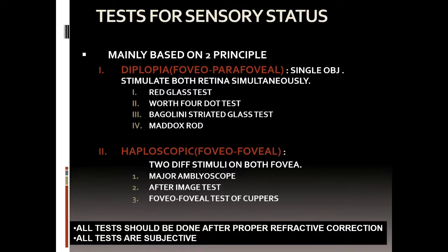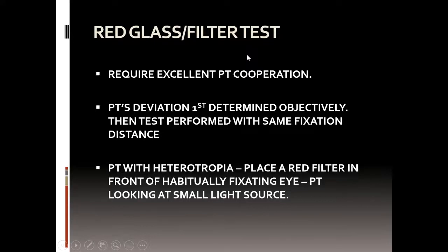When we talk about tests for sensory status, there are foveo-parafoveal tests — which are diplopia-based tests — including the red glass test, Worth 4-dot, Bagolini, Maddox rod, and Maddox wing. Foveo-foveal tests include mainly the after-image test, which can be done on a major amblyoscope or haploscope. The foveo-foveal test of Cuppers is unfortunately not commonly available today. The red glass or red filter test is a diplopia-based test.